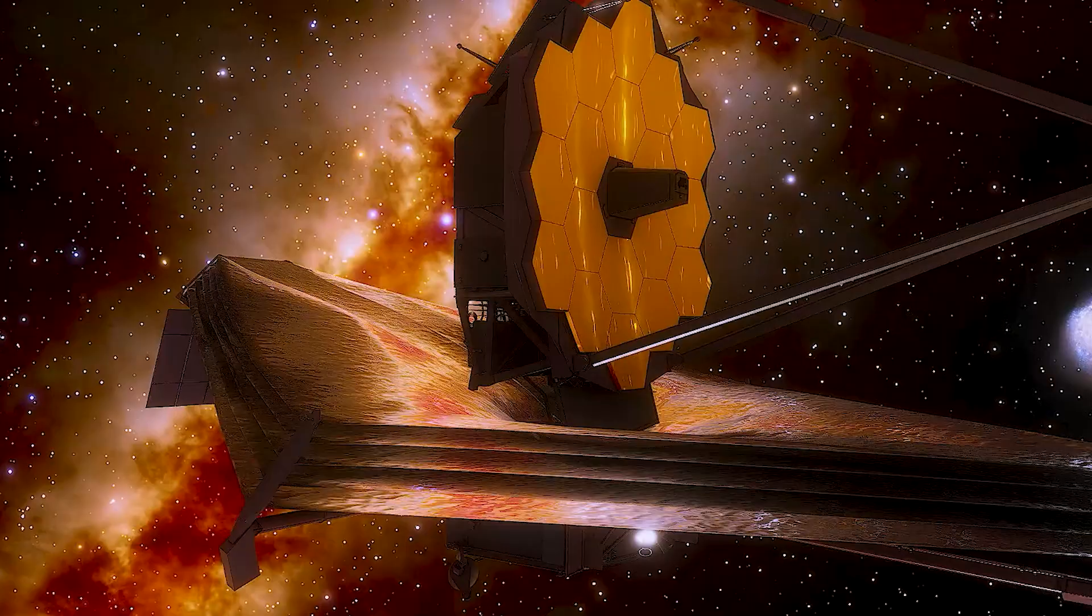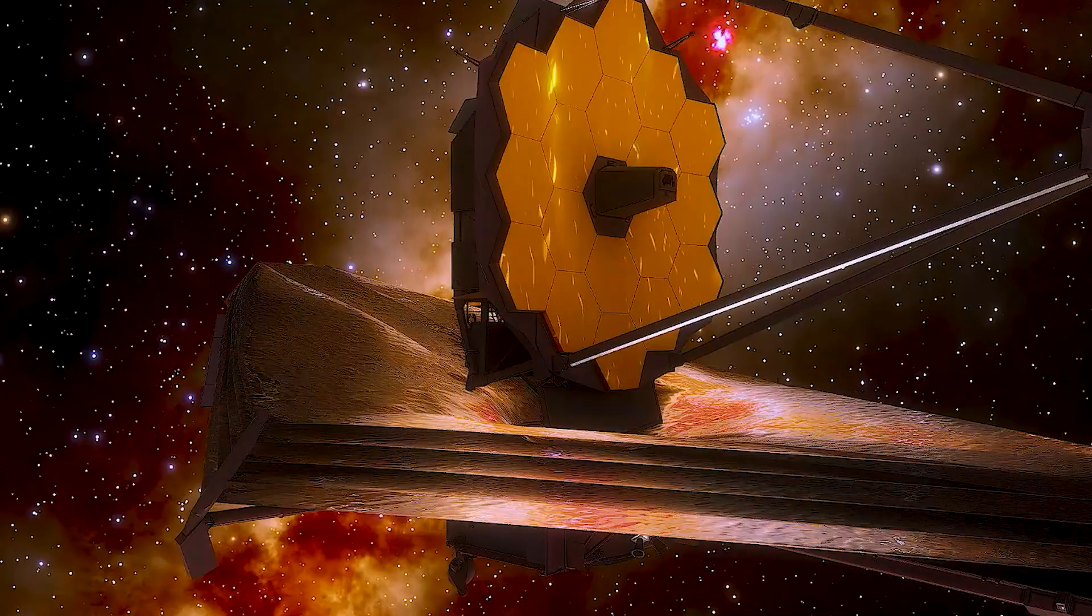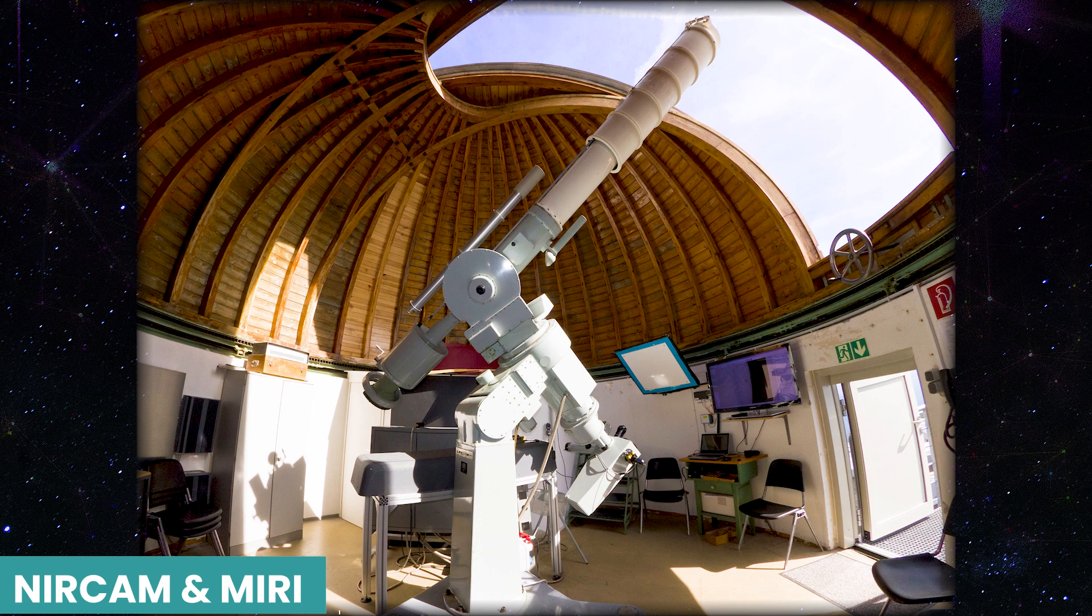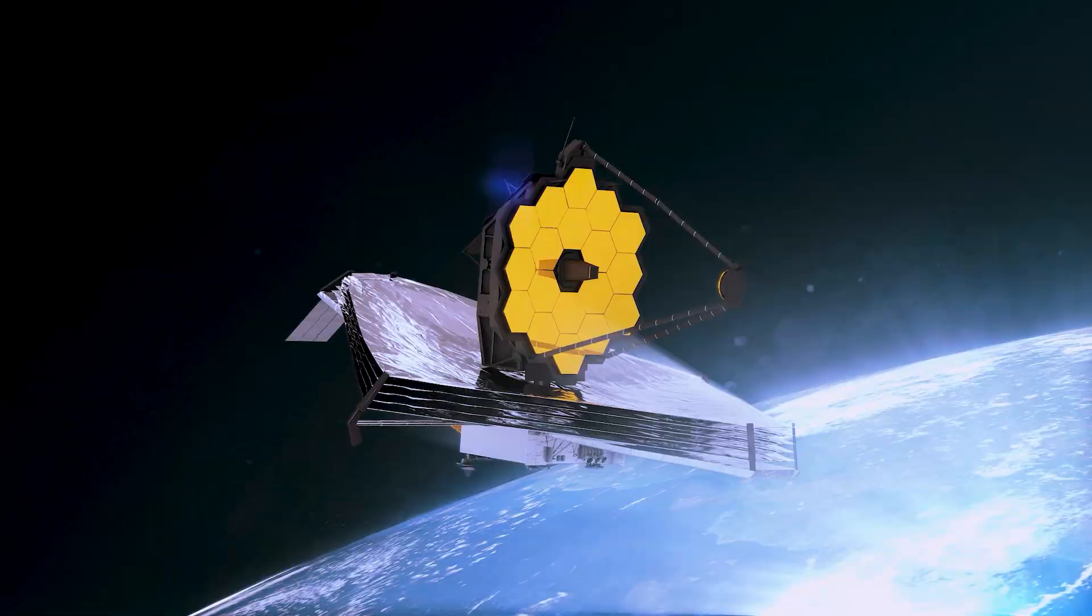Webb can clearly distinguish the planet from the star in the image because HIP 65426 b is about 100 times further from its host star than Earth is from the Sun. Coronographs or tiny masks that block out starlight are features of NIRCAM and MIRI, enabling Webb to take direct pictures of exoplanets like this one.